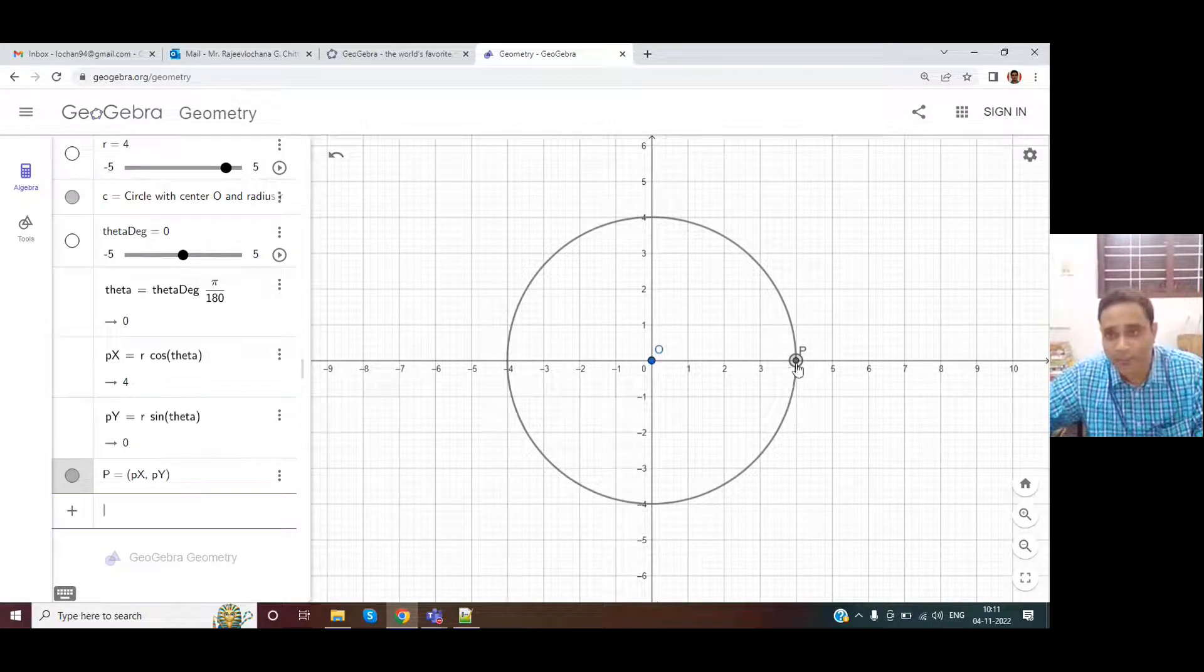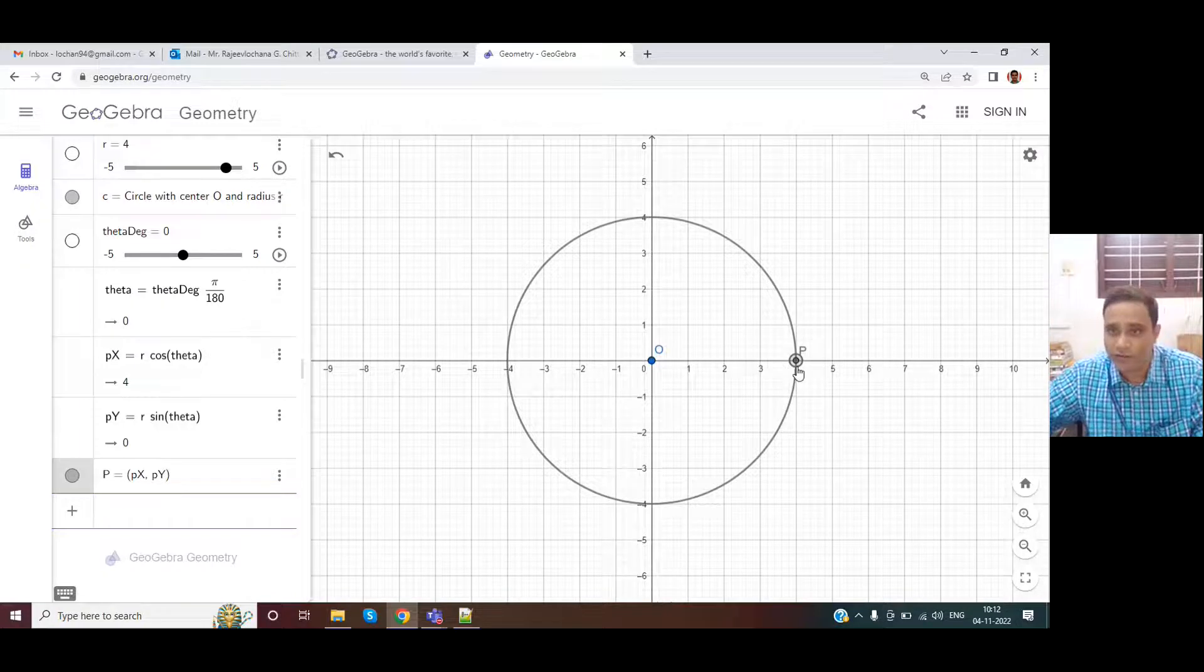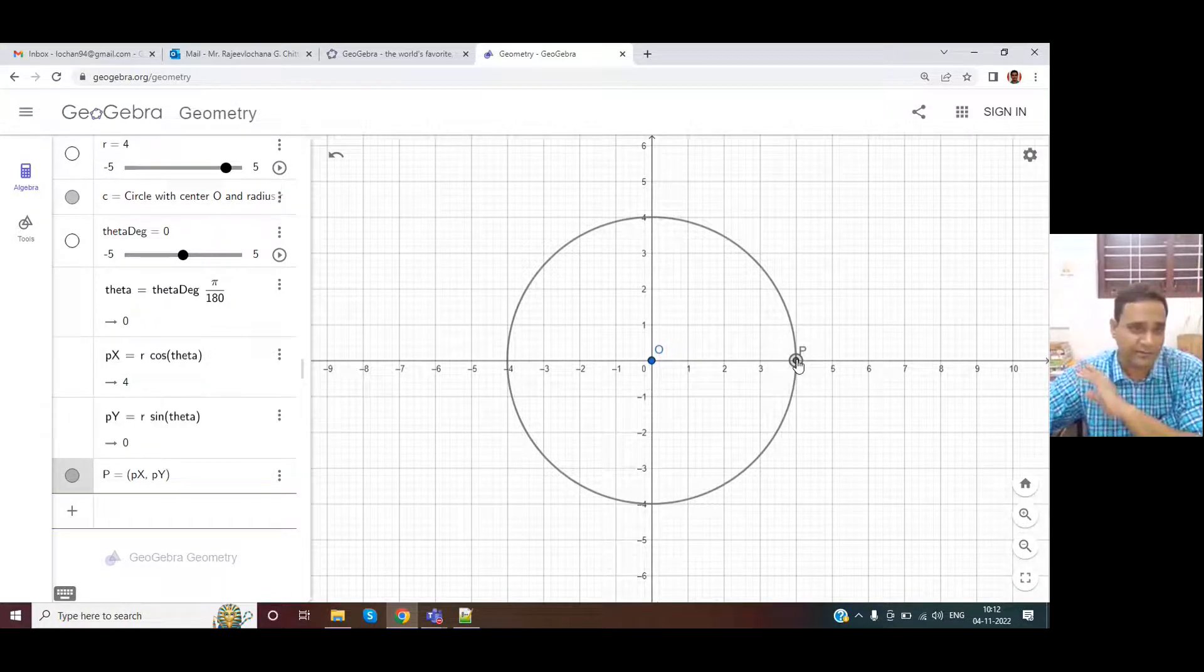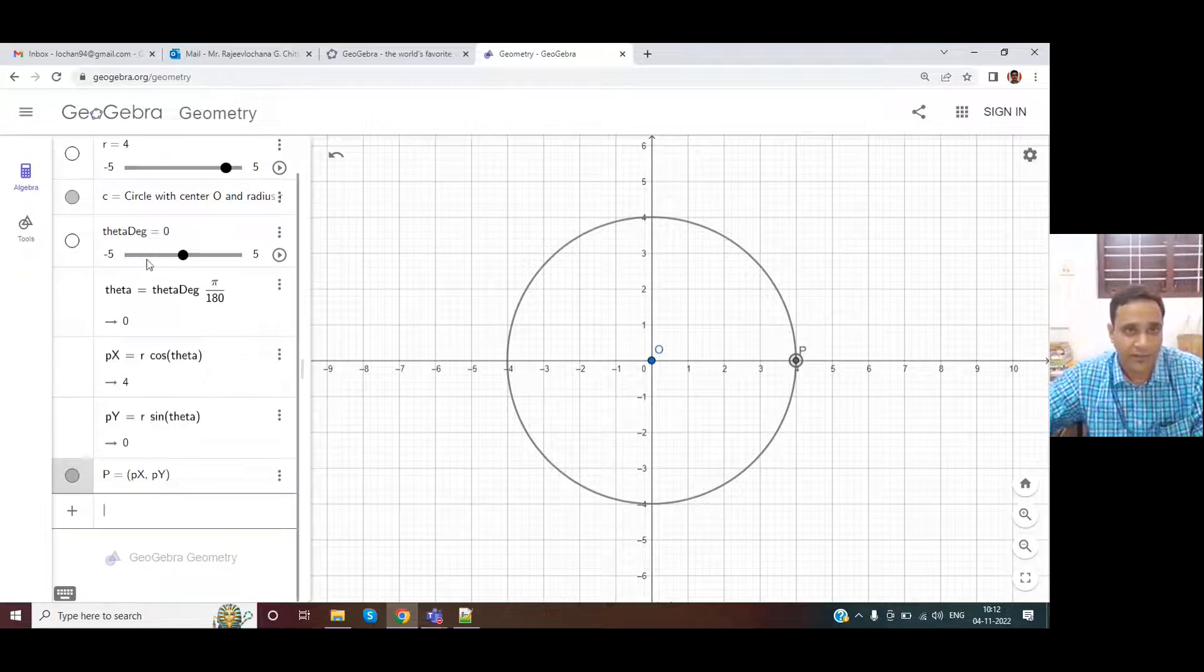So now the point P has been drawn on the circle, but obviously it is on the x axis, positive x axis.